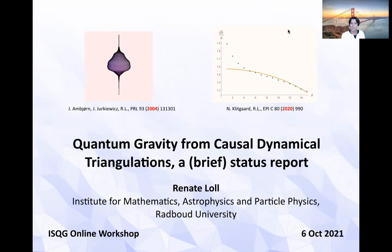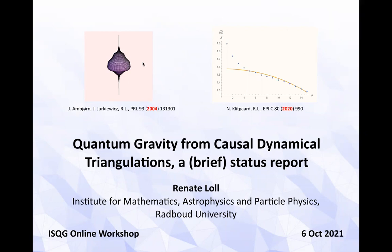Welcome to this brief status report on quantum gravity from causal dynamical triangulations. What you see on the first slide is an illustration of how far we've come from the beginnings of this approach — the first interesting results in four dimensions, the emergence of an extended universe in 2004 — to what we can do now, which is to actually determine a local curvature property of this emergent space-time with the help of a new version of Ricci curvature.